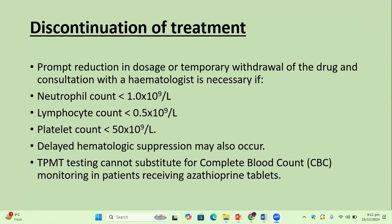Discontinuation of treatment: prompt dose reduction or temporary withdrawal in consultation with a hematologist is necessary when the neutrophil count falls below 1×10⁹ per litre, the lymphocyte count falls below 0.5×10⁹ per litre, or platelet count falls below 50×10⁹ per litre. Delayed hematological suppression may also occur. TPMT testing cannot substitute for complete blood count monitoring while the patient is on azathioprine therapy.